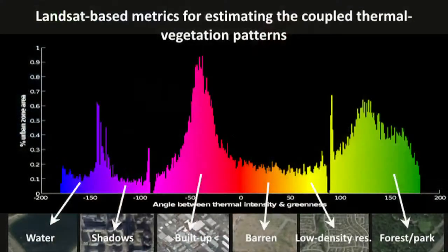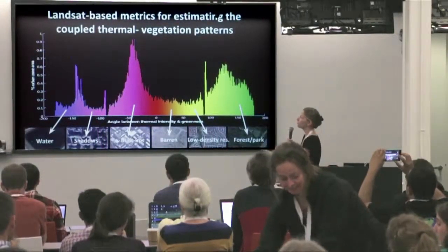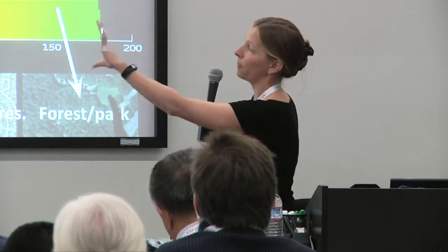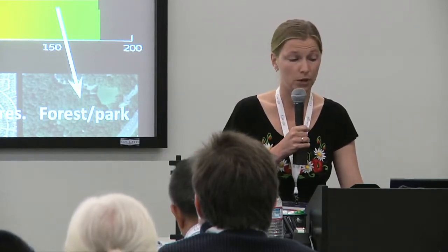Here is an example of one such metric: the angle between a thermal variable and a measure of greenness, measured as a spectral angle. It's shown as a distribution where each bin corresponds to the percent urban area or percent city area per value of that angle metric. We're testing how these differ among urban land covers and land use types in different regions.